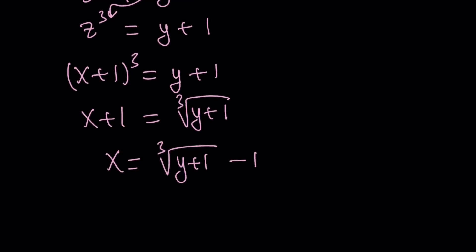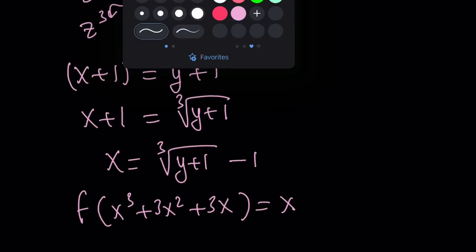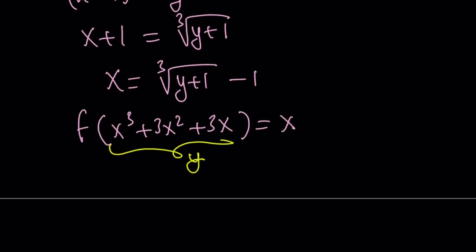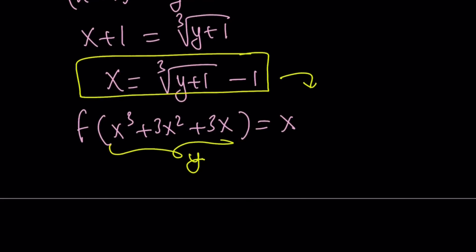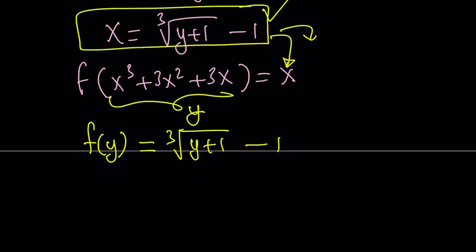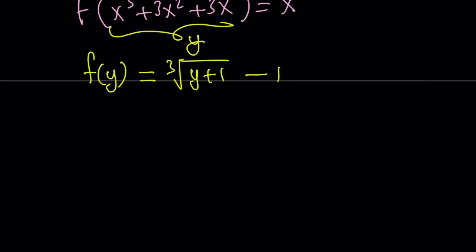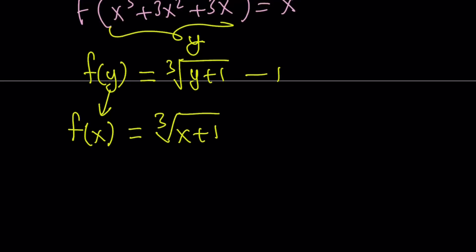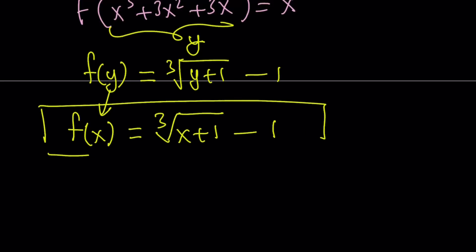In our original problem, f of x cubed plus 3x squared plus 3x equals x, we replaced the whole inner expression with y, then solved for x. So plugging back in: on the left-hand side inside the parentheses that becomes y, and on the right we have x. So this becomes f of y equals the cube root of y plus 1 minus 1. Since these are dummy variables, we can replace y with x: f of x equals the cube root of x plus 1 minus 1. And that's the answer.